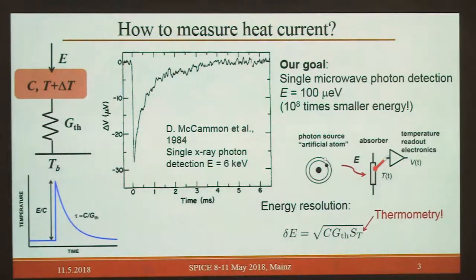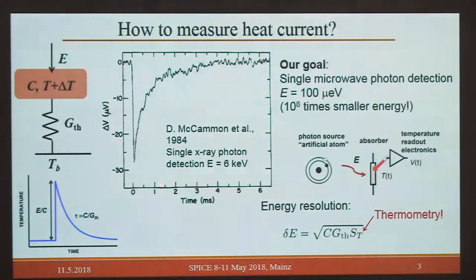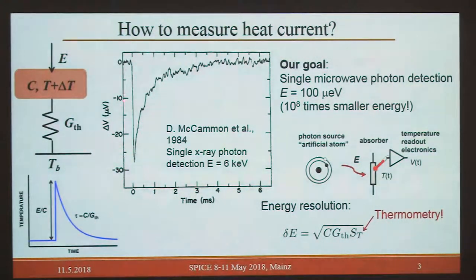For detecting single quanta like electrons, phonons, or other energetic quanta: if we inject heat pulses with energy E, as shown in Peter's talk yesterday, the temperature will change by E over C, and then relax back to the base temperature with time constant C over G_thermal. Detecting single quanta such as single photons is not something new — it goes back to 1984 for X-ray photon detection. But for microwave photon detection, the energy to detect is almost 10^8 times smaller.